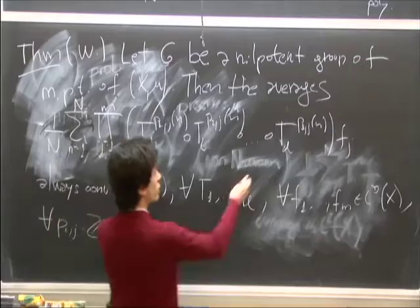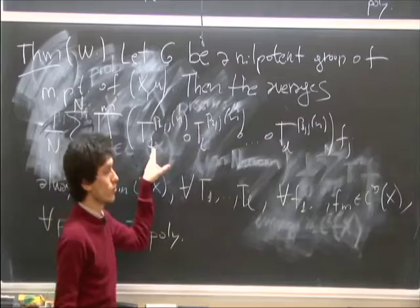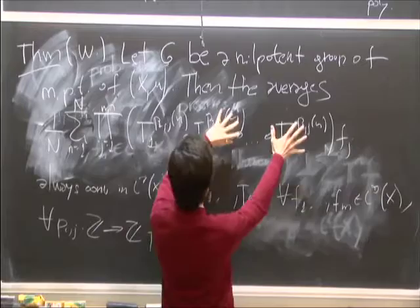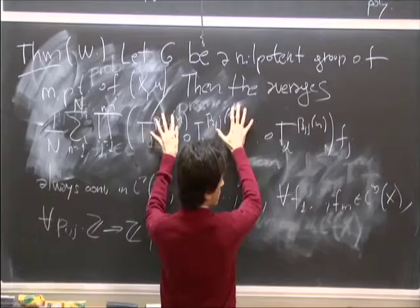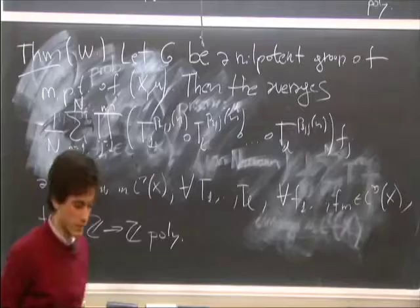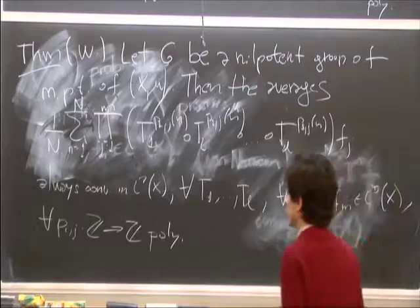You can see that this indeed generalizes in all three directions. Here you have the iteration—you just take one function. In the second case, each polynomial depends both on the transformation and the function; to recover the multiple-functions case, you just take zero polynomials for all but the relevant one. And since you're taking any polynomial, it also covers the third case. So it's actually all possible combinations of the three directions.